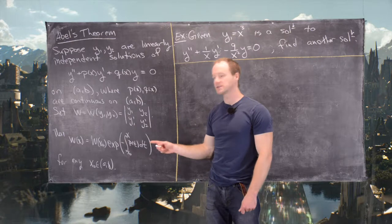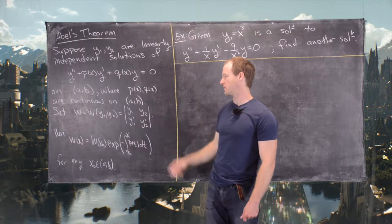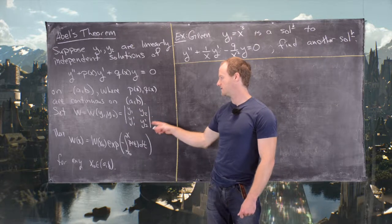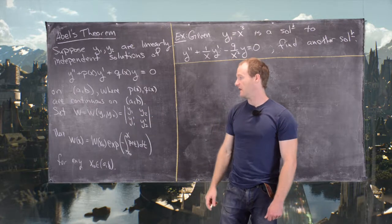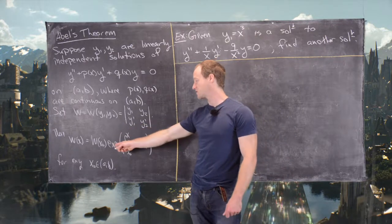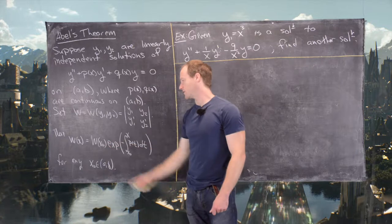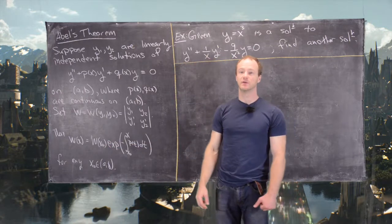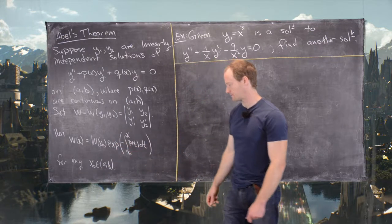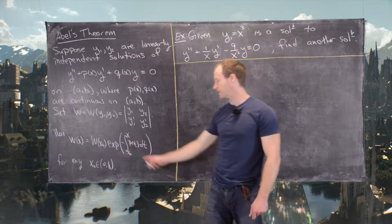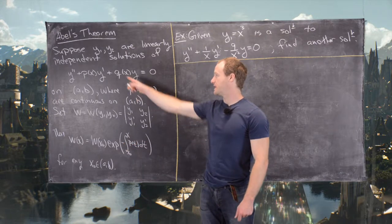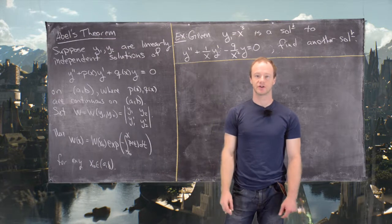Then we consider this thing called the Wronskian, which is defined to be the determinant of the matrix with columns y1, y1 prime, y2, y2 prime. The result of this theorem says that the Wronskian w is equal to some initial value of the Wronskian — which we can take to be 1 in practice — times the exponential of the antiderivative of negative p of t, where p is the coefficient of y prime.